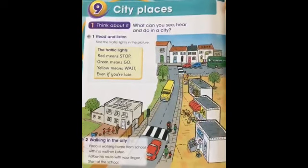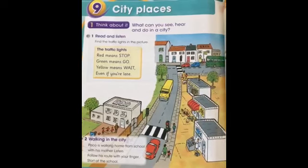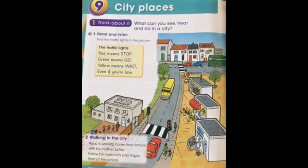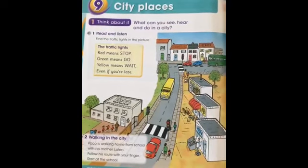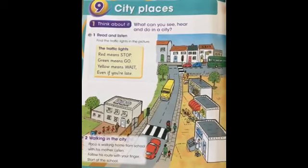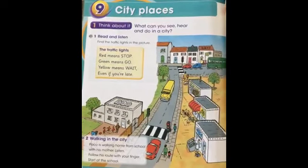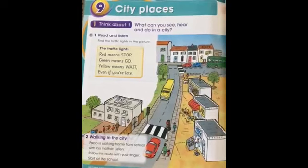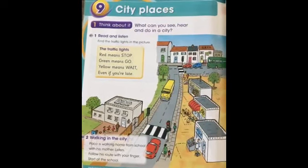Now, look at the picture. What can you see here in this picture? What do we have here in the city? Yes, it is a picture of the city. We have here shops, buildings, and we have here some children. They are playing. And we have here cars in the street. Yes, very good.